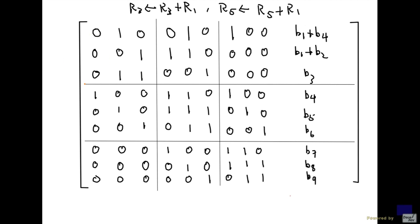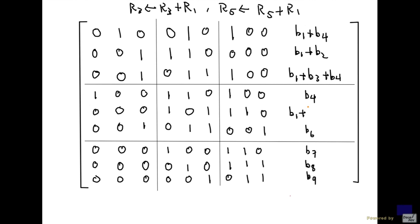Adding row 1 to row 3 gives entries 0, 1, 1, with b1 plus b3 plus b4 on the right-hand side. Adding row 1 to row 5 gives 0, 0, 1, with b1 plus b4 plus b5 on the right-hand side.